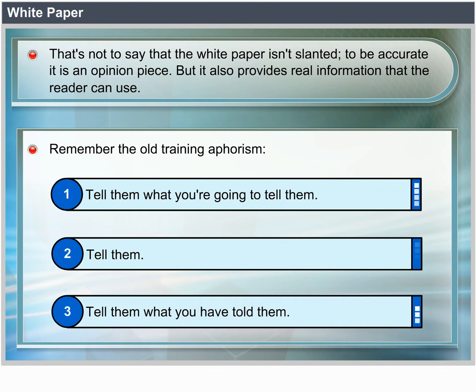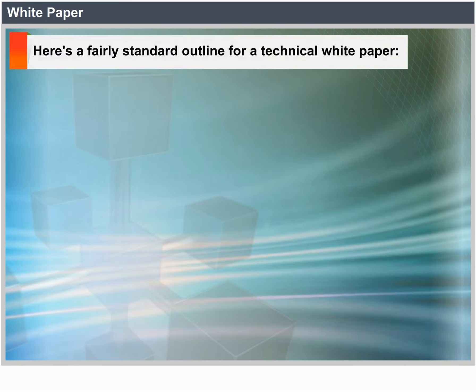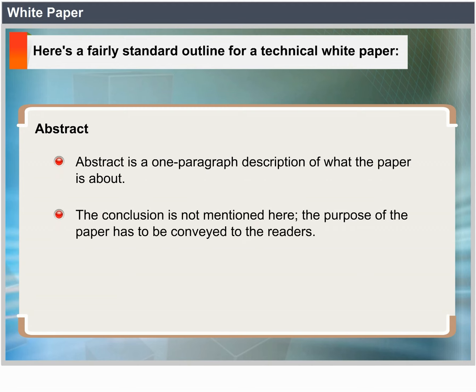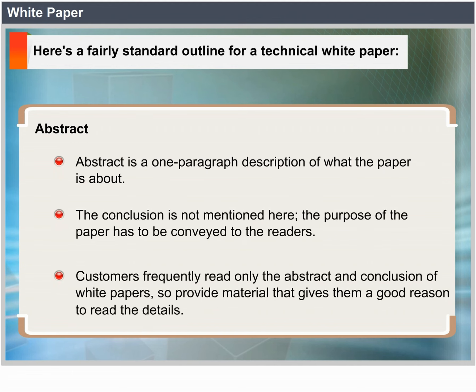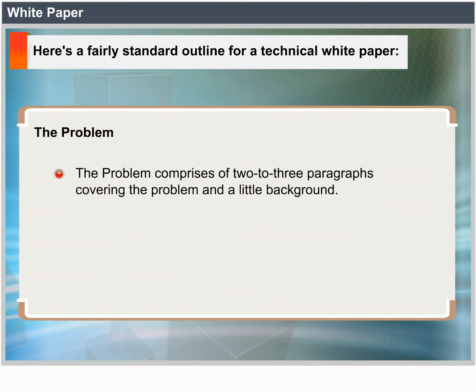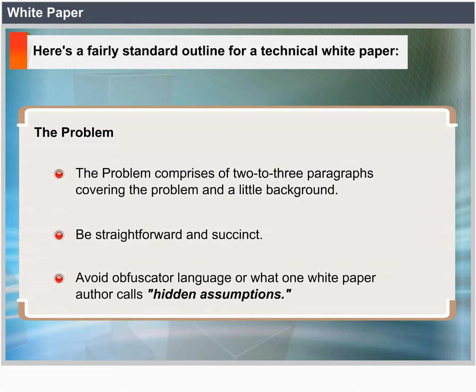Here's a fairly standard outline for a technical white paper. Abstract: A one-paragraph description of what the paper is about — do not state the conclusion here, simply tell the reader what the purpose of the paper is. Customers frequently read only the abstract and conclusion of white papers, so provide material that gives them a good reason to read the details. The Problem: Two to three paragraphs covering the problem and a little background. Be straightforward — avoid obfuscatory language or what one white paper author calls 'hidden assumptions.'